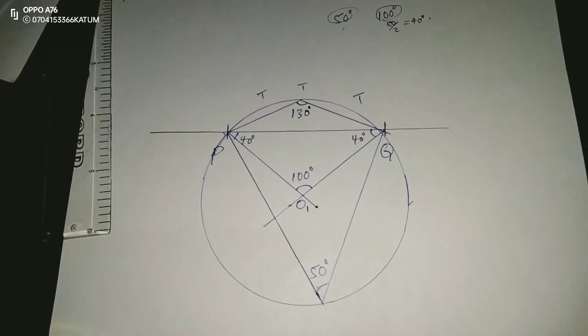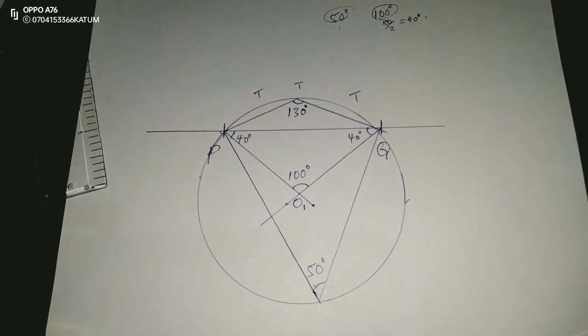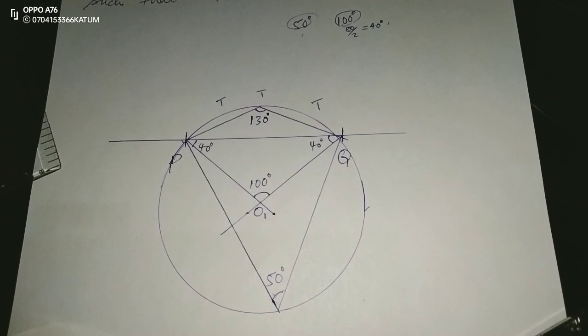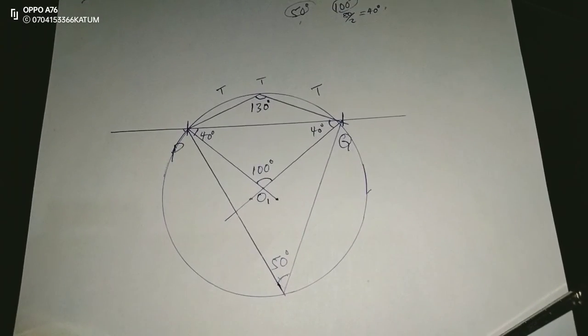So that is how we construct the constant angle loci given an obtuse constant angle. Thank you for following. Subscribe and share.